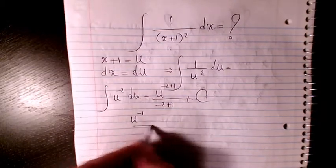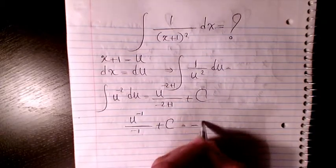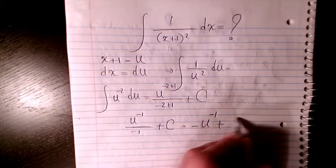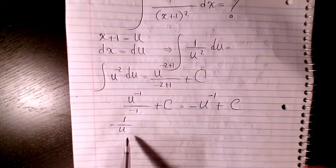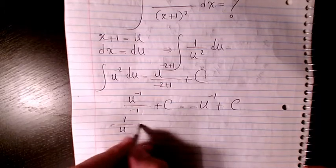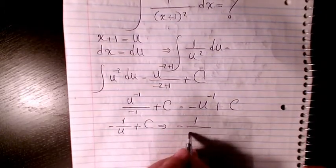Or you can say negative 1 over u, because u to the power of negative 1 is the same as inverse of u plus a constant number. So it will be negative 1 over u, which is x+1, plus a constant number. So that will be the final answer to this question.